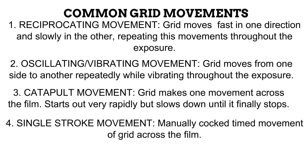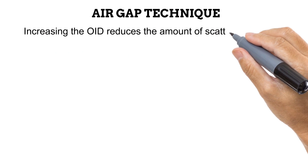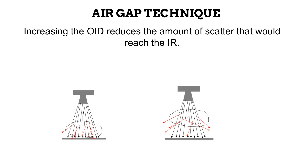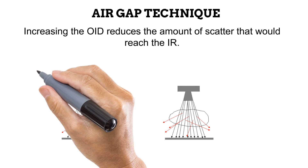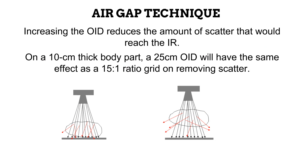Now that we have looked extensively at grids, let us look at the second method of preventing scatter from reaching the image receptor — the air gap technique. It involves introducing distance between the anatomical part and the image receptor, an air gap. With the object in contact with the receptor, a lot of scatter reaches it. However, when an OID is introduced, the deflected scattered photons continue to diverge out of the range of the image receptor. It has been observed that on a 10 cm thick body part, a 25 cm OID has the same effect as a 15:1 ratio grid. While the air gap technique is helpful, grids are still the preferred option because OID causes unsharpness and magnification.